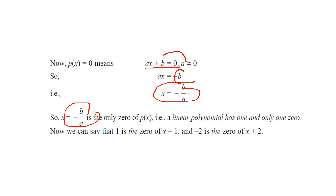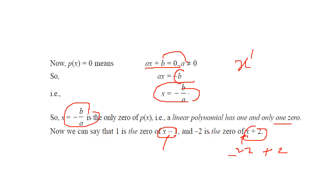So a linear polynomial has one and only one zero. Linear polynomial because it is only x to the power 1. We can say that the zero of x minus 1 is 1, and minus 2 is the zero of x plus 2 because minus 2 plus 2 equals 0. So minus 2 is the zero of this.